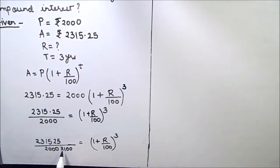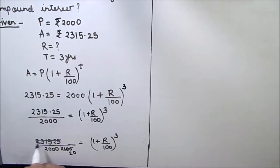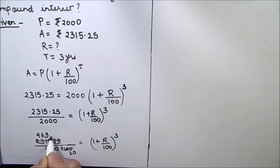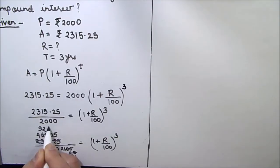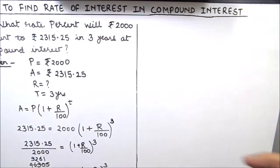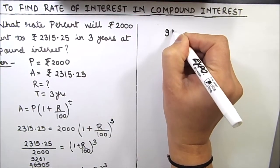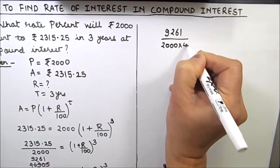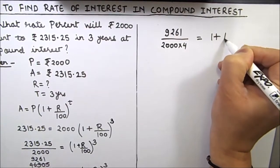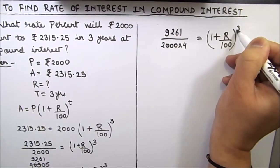Now we'll solve this using cancellation. After cancellation, in the numerator we have 9261 and in the denominator we have 2000 multiplied by 4. On the right hand side, 1 plus r divided by 100, raised to the power 3.